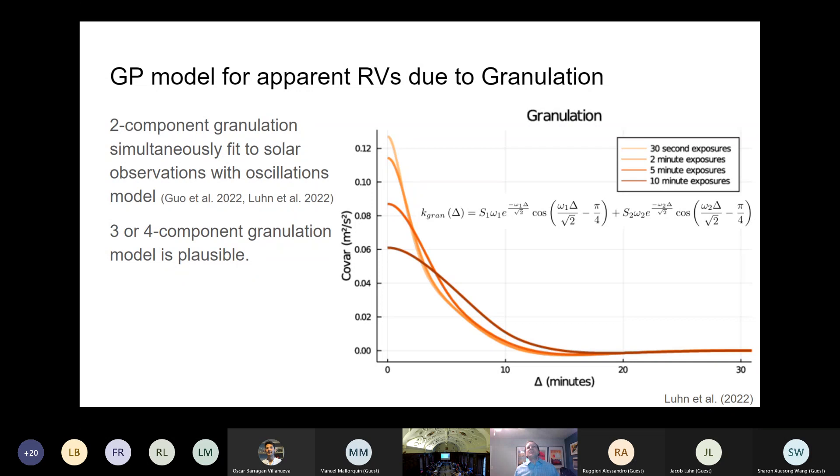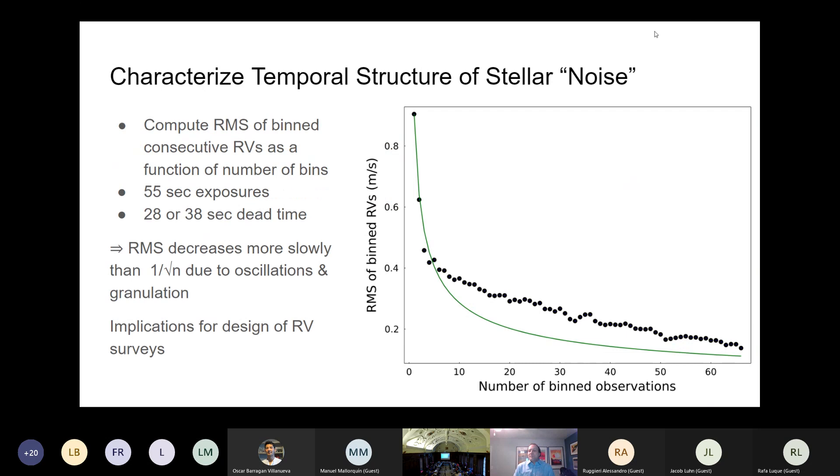We can do the same thing with granulation. In this case, the kernel's a little bit different, but still familiar looking in many ways. We adopted a two-component granulation model for this because that's what we were able to calibrate with the asteroseismology that Zhao was looking at based on that data. It's possible there's a third or fourth granulation component on longer timescales, and we'll maybe get to that a little bit later.